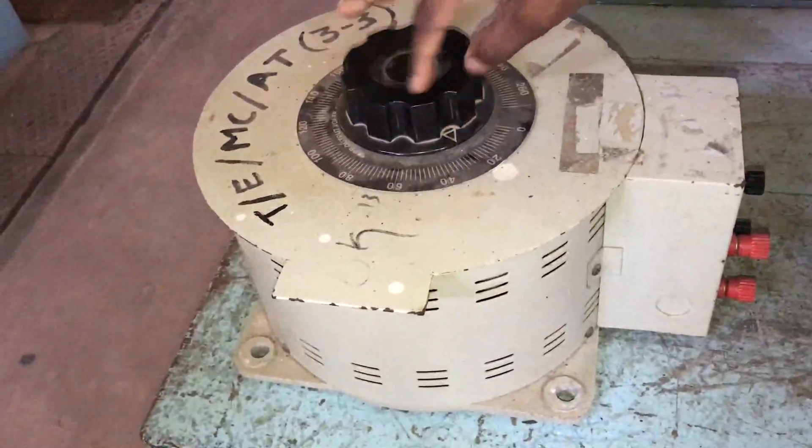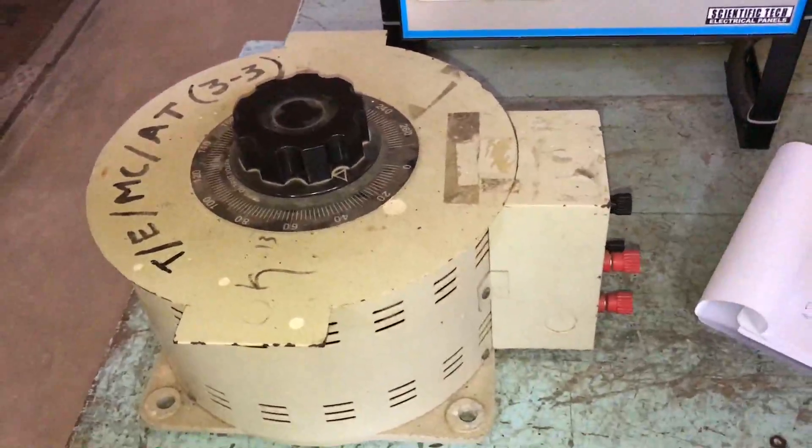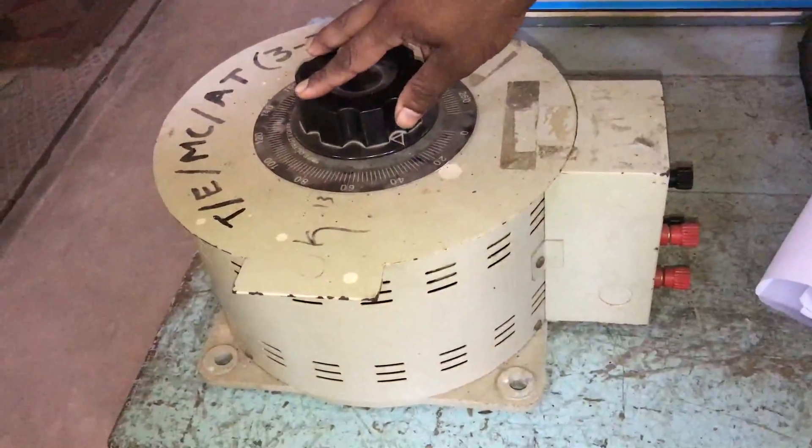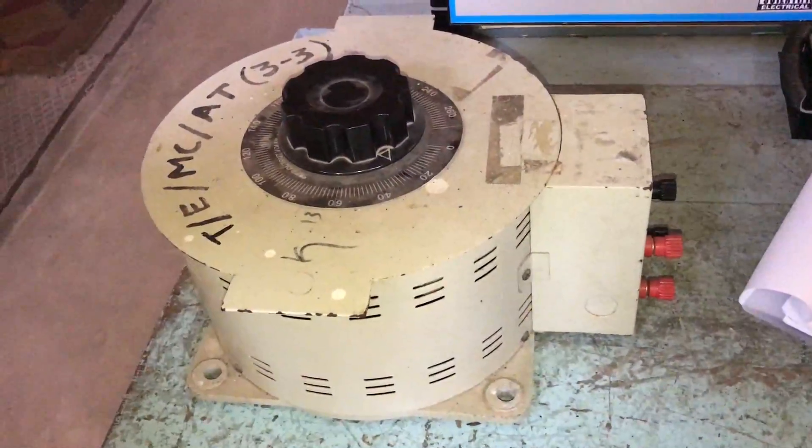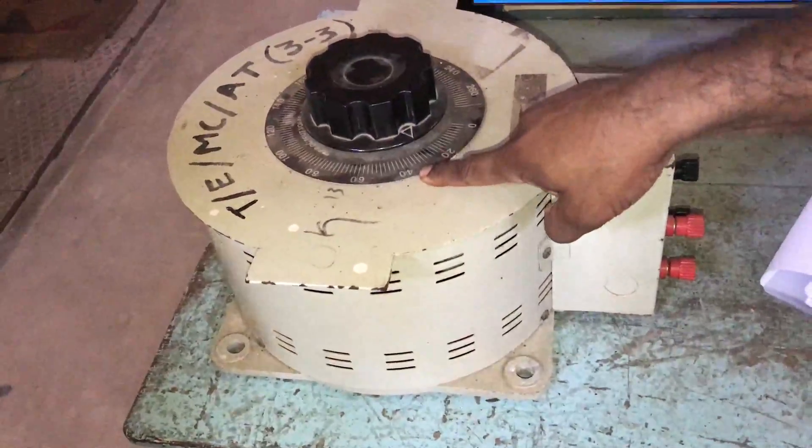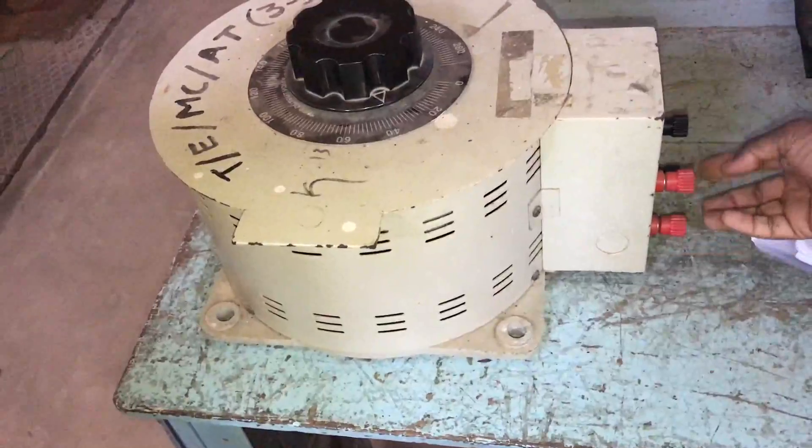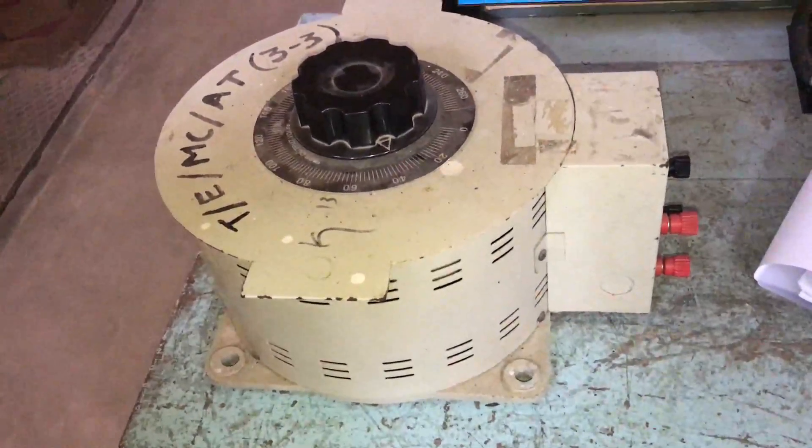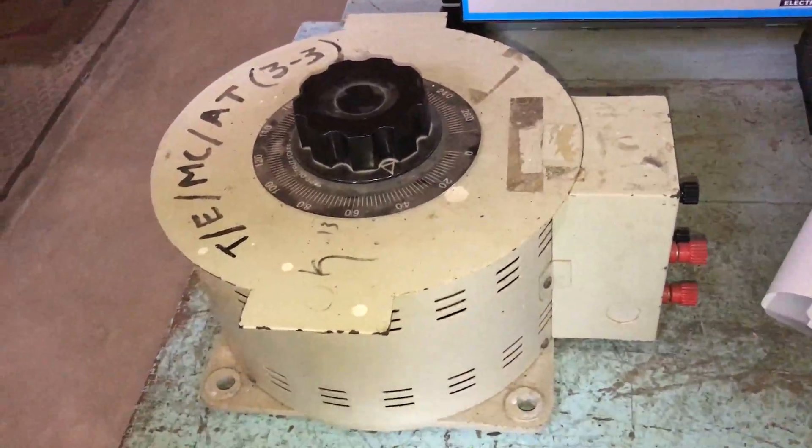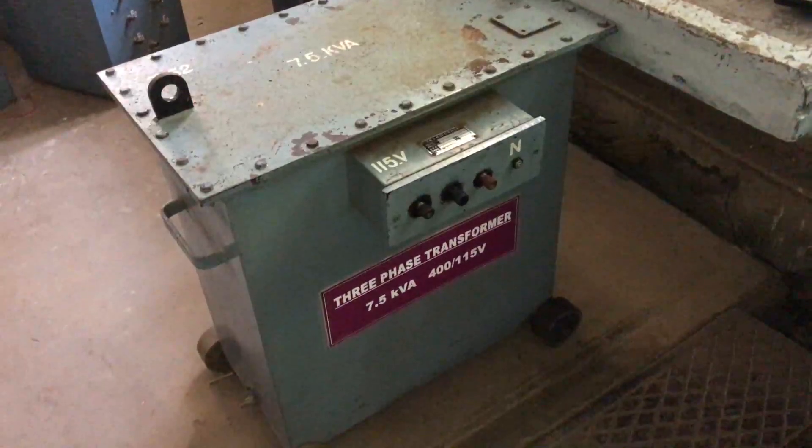The main use of this is varying the voltage. Whenever in industrial application different types of voltage are needed, you adjust it. Whenever we want 40 volts, we adjust to 40 volts, then we will get that voltage at the output. Irrespective of the input, we can change the output. That is the use.